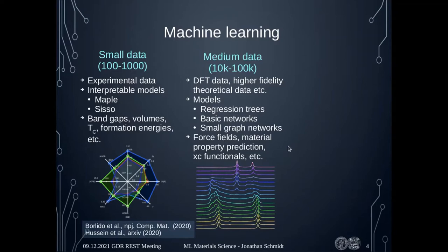In this medium data regime, force fields are maybe the most successful application yet in chemistry and physics of machine learning. We can now build a force field for any solid or crystal structure system that is quite close to density functional theory, though they are not really transferable yet to different systems. You can also use them to calculate phonon or Raman spectra. There are also many material property predictions — everything from band gaps to bulk and shear moduli to grain boundary energies. There are probably hundreds of different properties that have already been predicted, usually to avoid doing more DFT calculations.